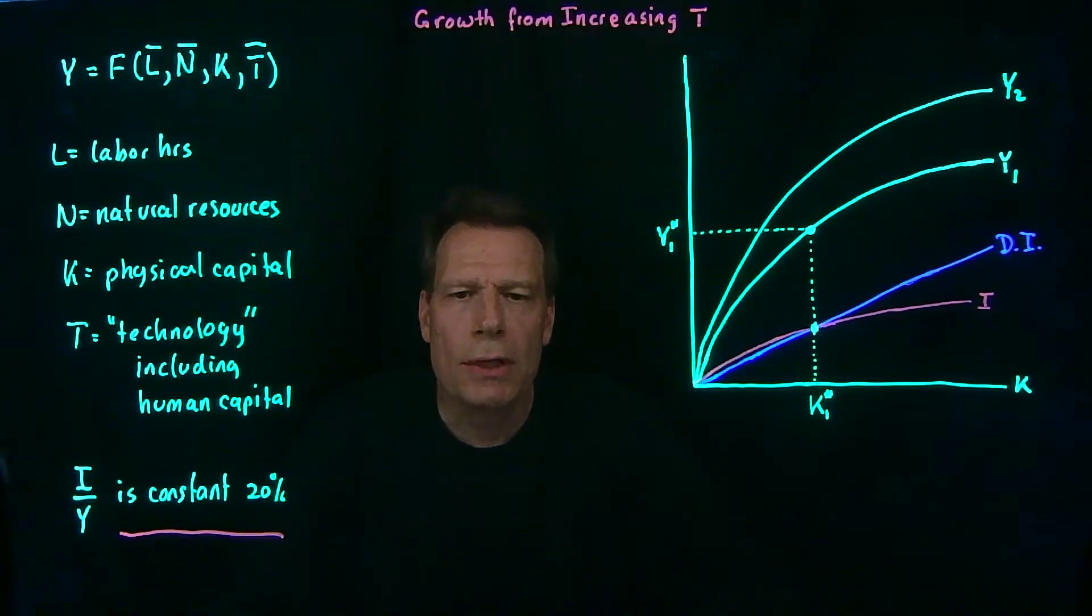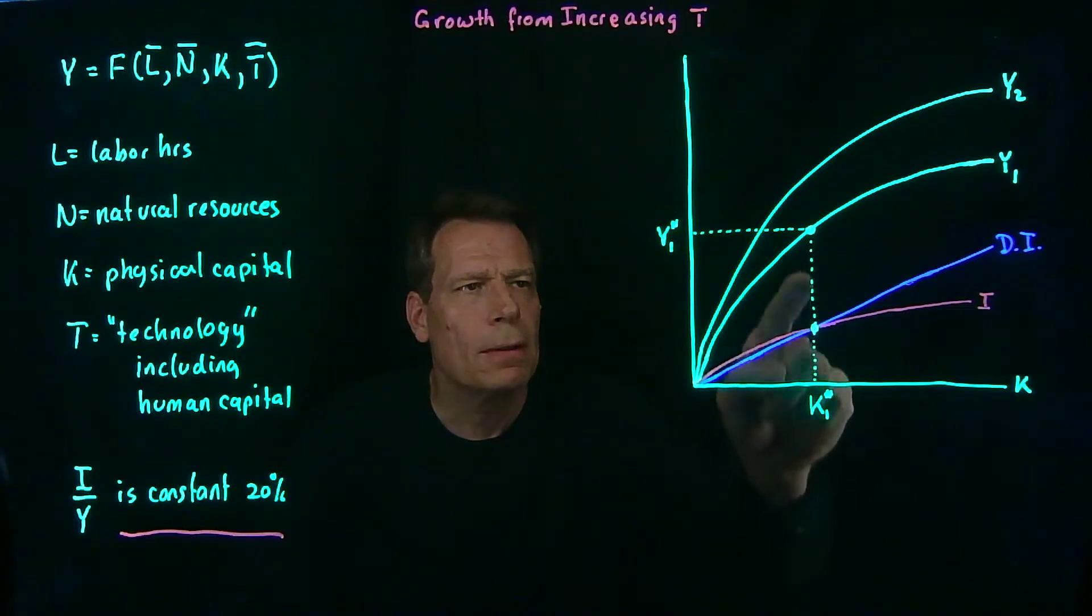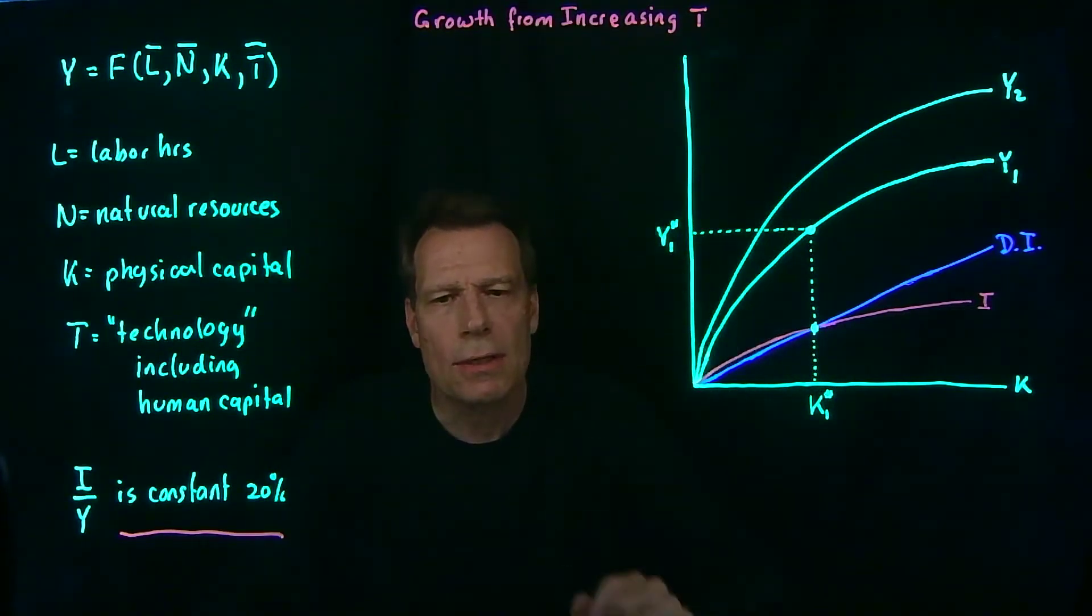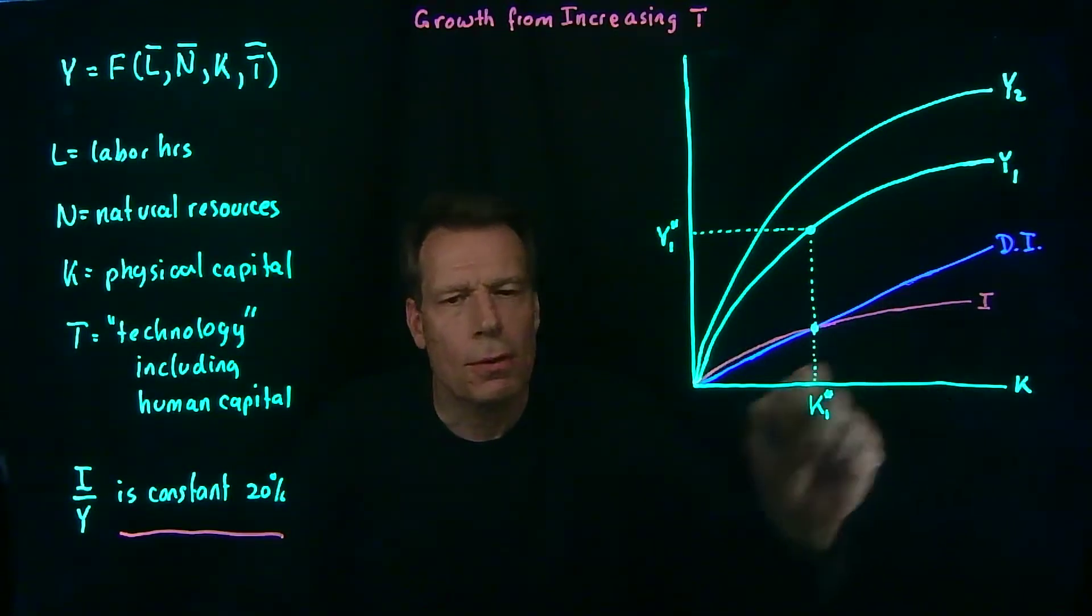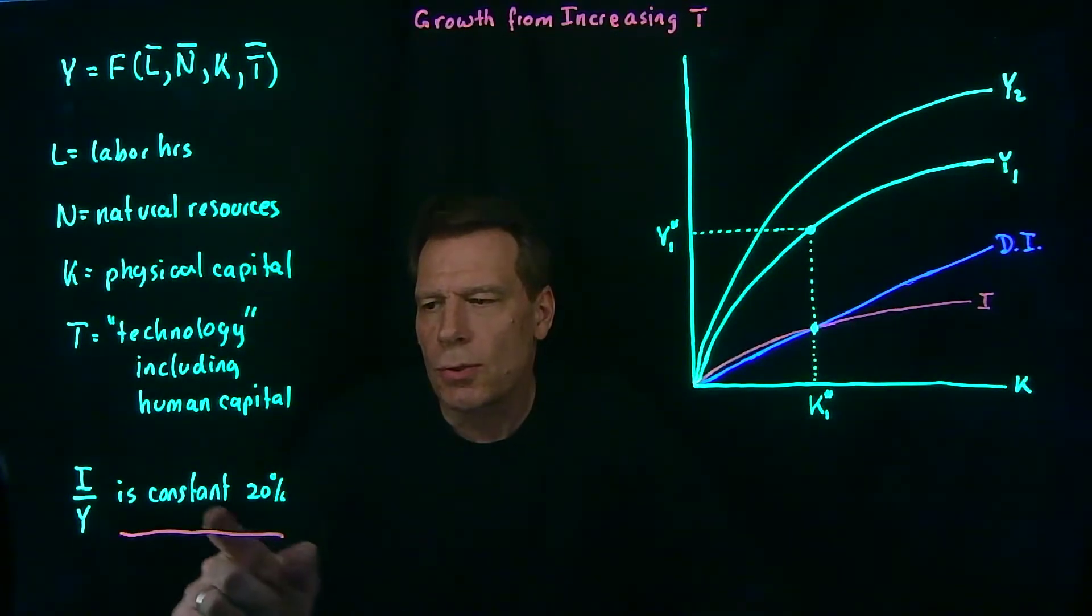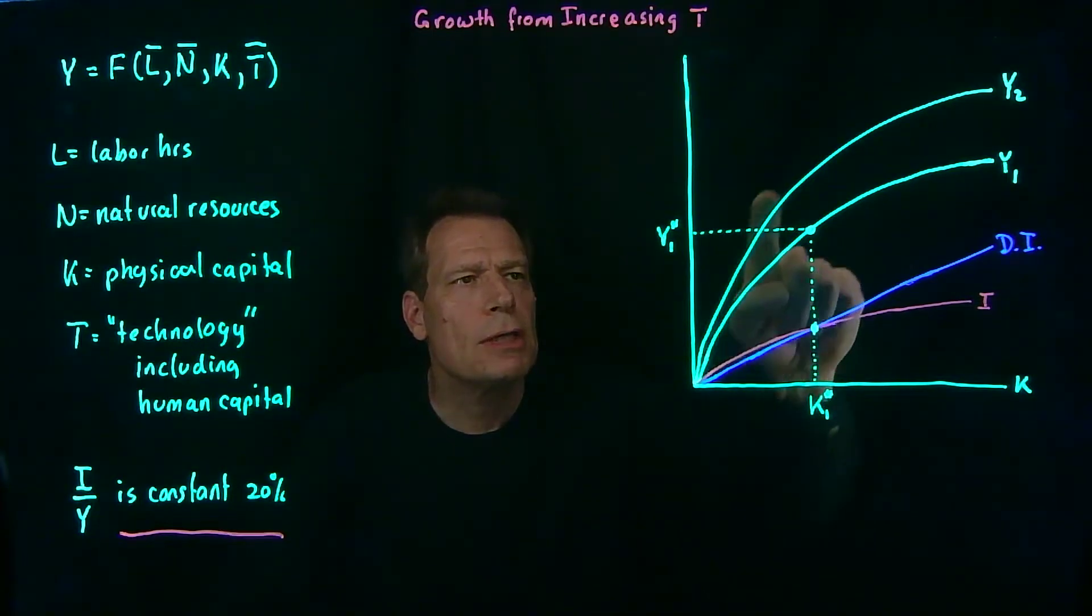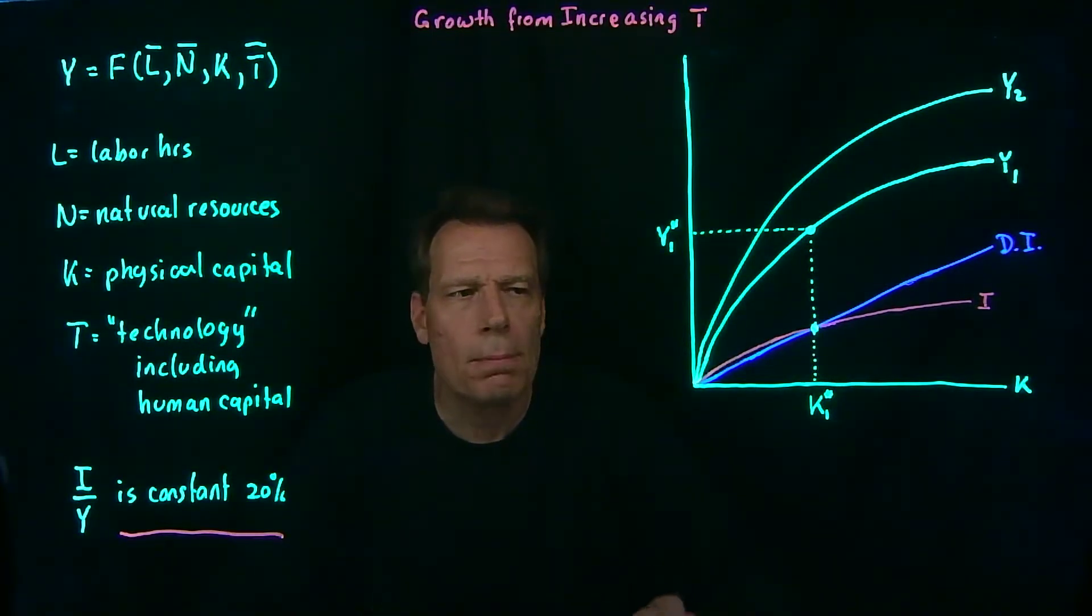But is that all that's going to happen? If all that happened was that this curve rotates up, we would have a fixed level of capital, and we would see an increase in GDP. But remember how we got that investment curve in the first place. We assumed that the investment share of GDP is constant at 20%. Suppose it remains constant at 20%, but now GDP is higher. If GDP goes up, then investment,